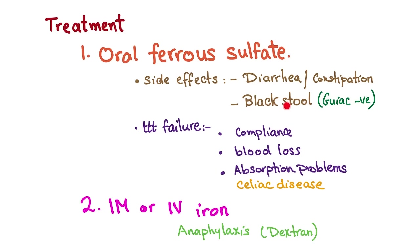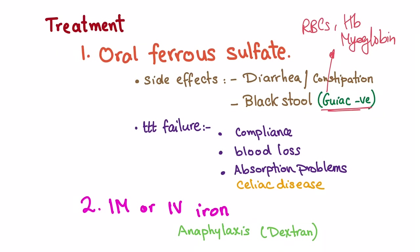Treatment starts with oral ferrous sulfate. Side effects include diarrhea or constipation and black stool — since iron passes in the stool, however this is guaiac-negative because the guaiac test detects RBCs, hemoglobin, and myoglobin, not iron alone. Causes of treatment failure include non-compliance, ongoing blood loss, or absorption problems. Resistant cases are usually associated with celiac disease.